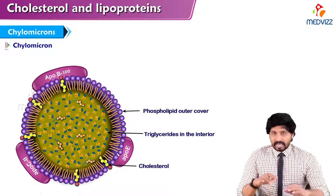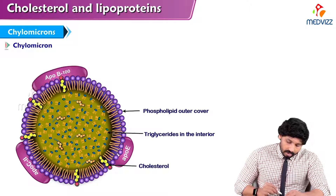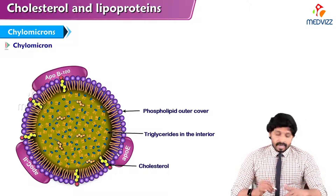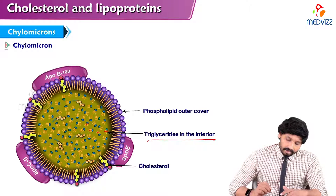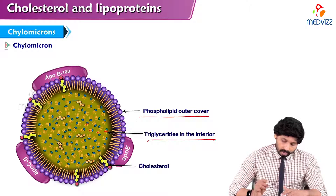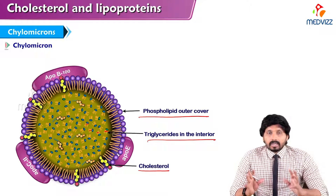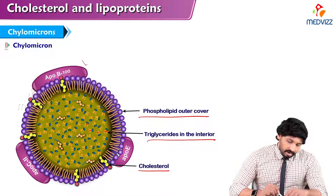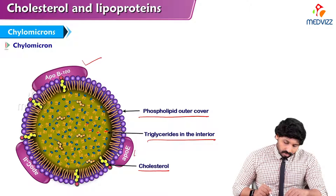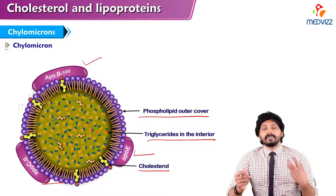Looking at the structure of a typical chylomicron, there is a lipid surrounding layer with cholesterol in the middle. Inside, a high percentage is triglycerides in the interior, and it has a phospholipid outer layer. There is a small amount of cholesterol within the phospholipid outer layer and also inside. The major substance in the interior is triglycerides. ApoB100, ApoE, and ApoC2 are present, and ApoE and ApoC2 have been acquired from HDL — HDL being the donor of ApoE and ApoC2.